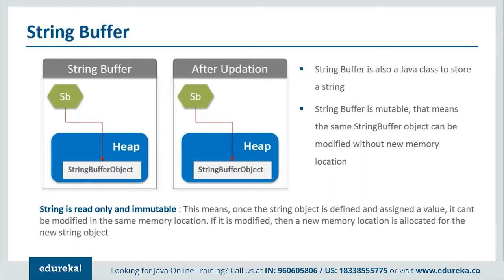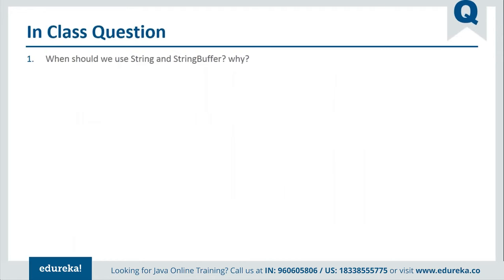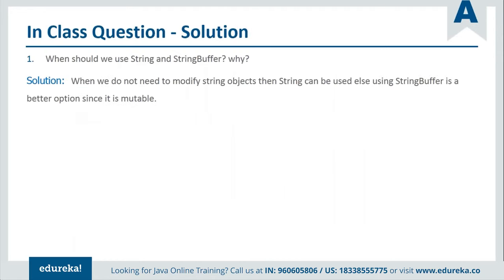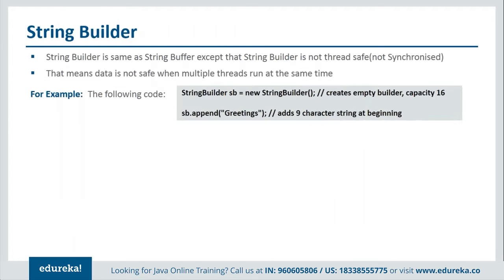How is StringBuffer different from a normal String? With a normal String, once you create a particular object and assign a value to it, if you want to assign a new value it has to be at a new memory location — so a String is restricted to one memory location per value. Whereas StringBuffer lets you change or update values in the very same memory location using the same object.